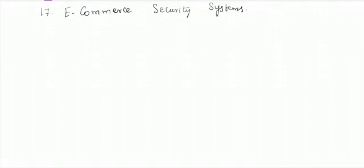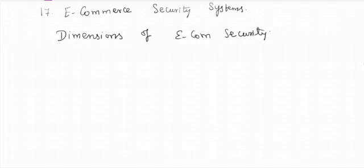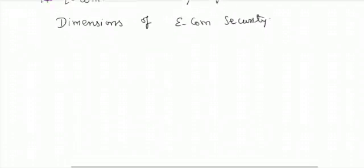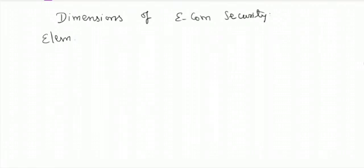Students, today we are going to continue the 17th lesson, which is your e-commerce security system. In the previous class we completed the definition and the types of e-commerce threats. Today we are going to continue with that topic — the dimensions of e-commerce security. We will discuss the security elements that are involved in e-commerce security.